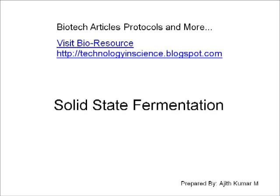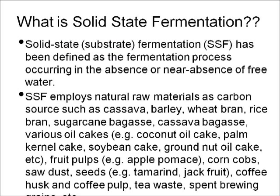Welcome to the presentation on solid-state fermentation. Solid-state fermentation, or solid substrate fermentation, is a fermentation process occurring in the absence or near absence of water. It implies natural raw materials as carbon sources, such as cassava, barley, wheat bran, rice bran, fruit bulbs, corn cobs, sawdust, and coffee pulp.